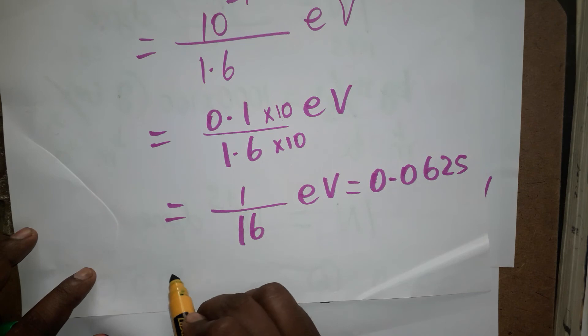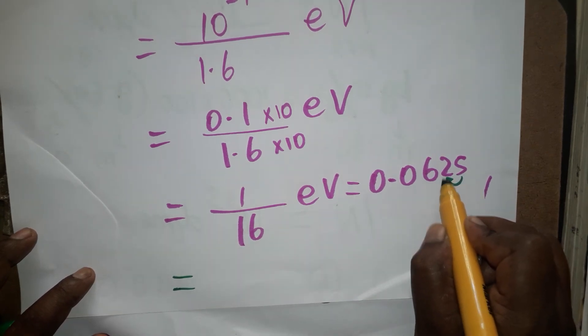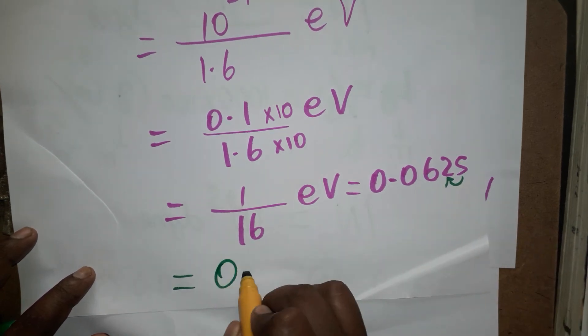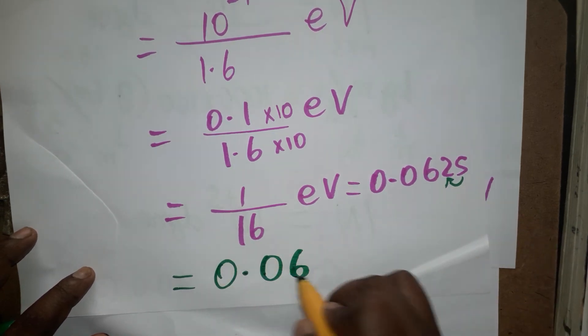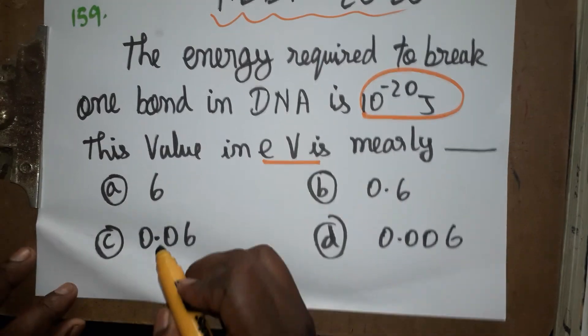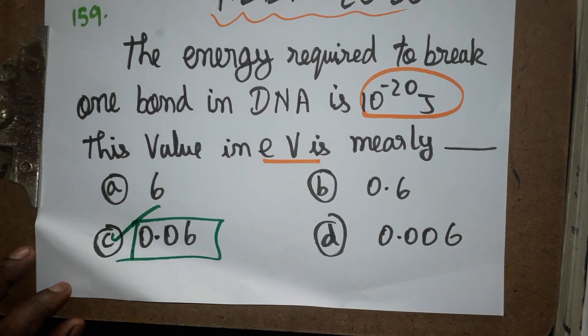If you round, this becomes 3, and since 3 is less than 5, we get 0.06 eV. The answer for this question is 0.06 eV. Thank you for watching my channel. If you like my channel, please subscribe. Thank you everyone.